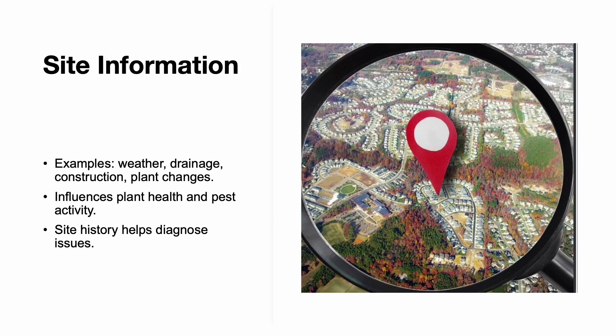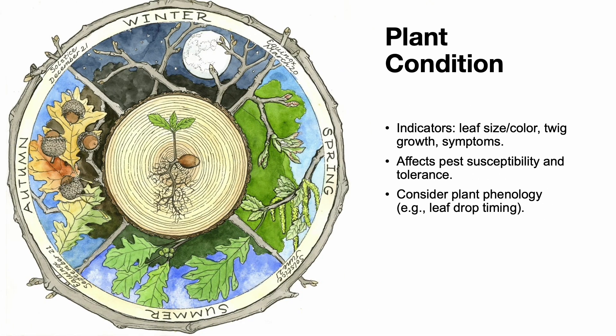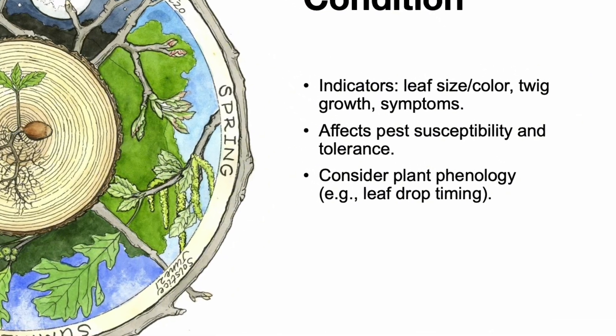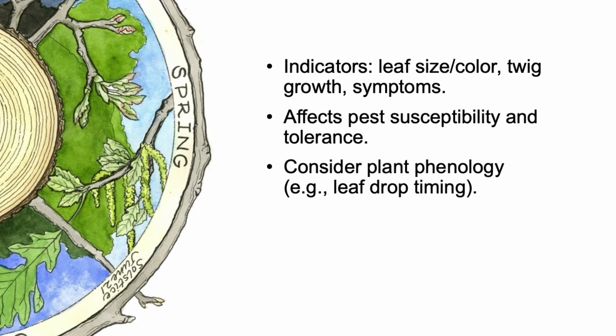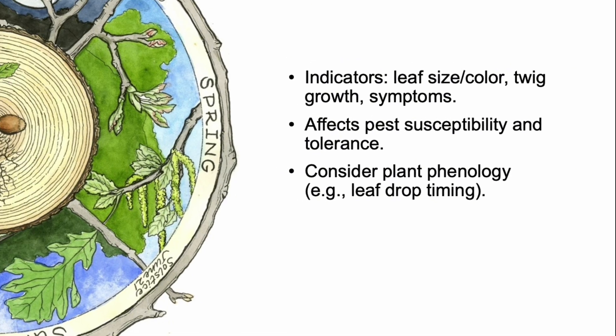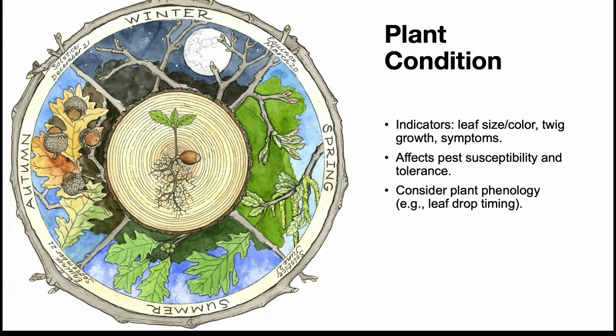Understanding site conditions gives us critical context. We look at recent weather, drainage patterns, nearby construction, and changes to surrounding plants. These factors can directly affect pest presence and plant health. Site history is often key to diagnosing recurring or long-developing problems. Plant health influences both susceptibility and tolerance. We examine traits like leaf size and color, new twig growth, and any visible symptoms. Phenological clues such as timing of leaf drop or flowering also help us understand what's normal and what's not.